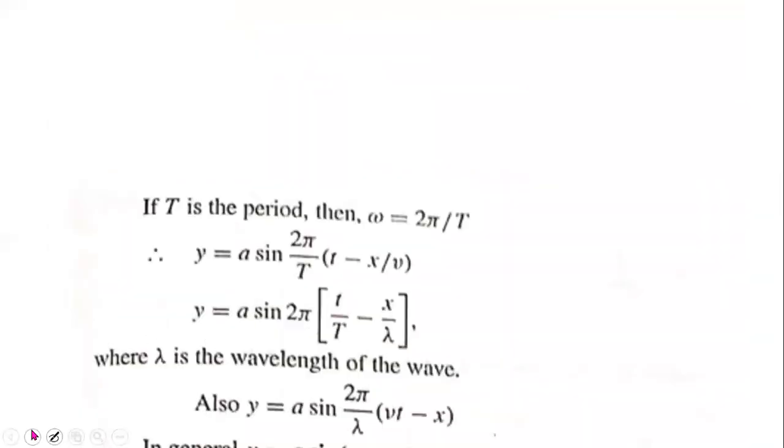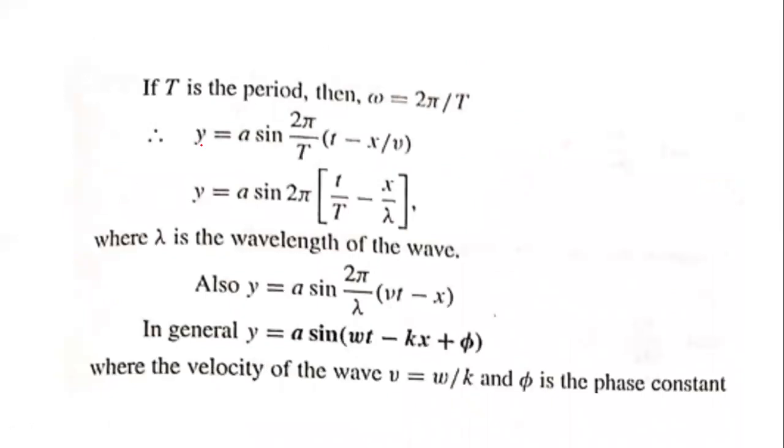Now, omega equals 2 pi by T, so y equals a sin 2 pi by T into (t minus x by v). Since T into v equals lambda, the wavelength, the equation becomes y equals a sin 2 pi times (t by T minus x by lambda). Also y equals a sin 2 pi by lambda, where lambda by T is the velocity.